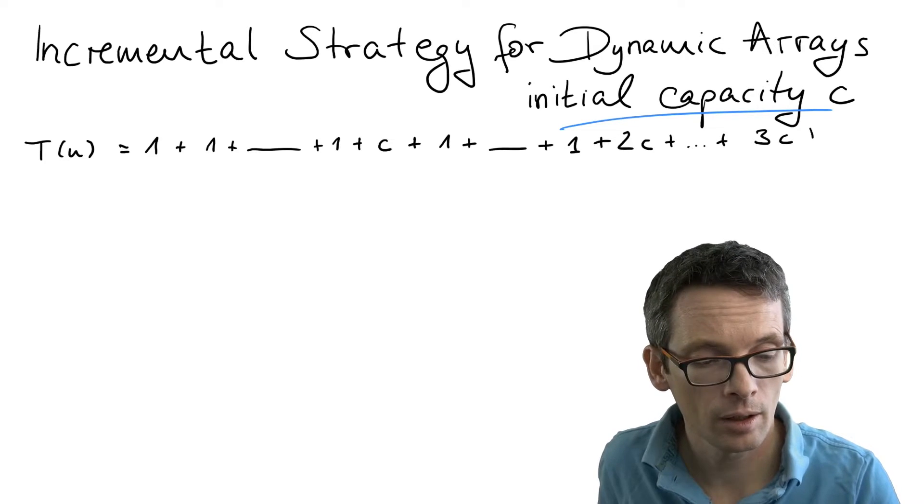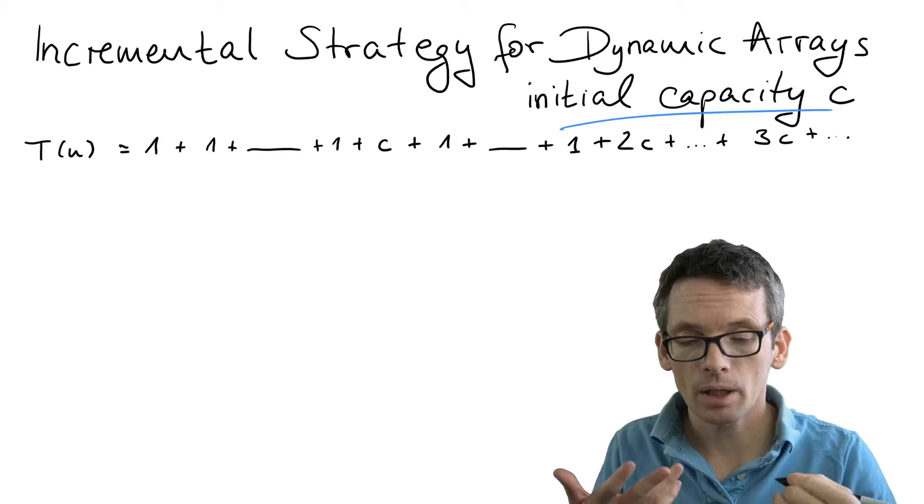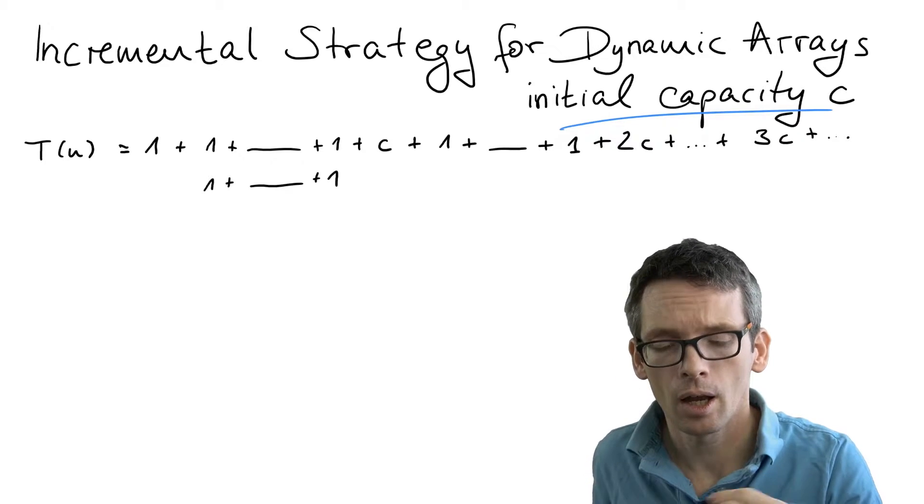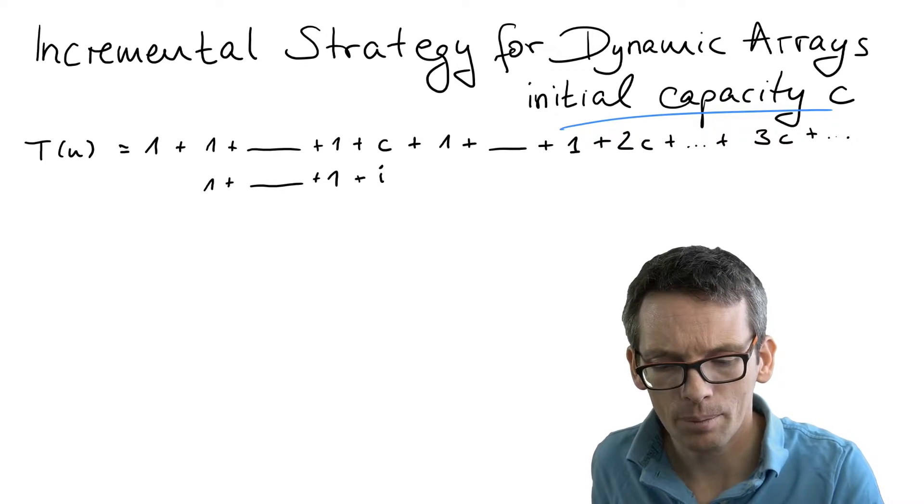So then we end up at 3c. Generally speaking, we have these terms—I mean, we have the plus one terms, obviously always—but we have these terms of the type i times c.